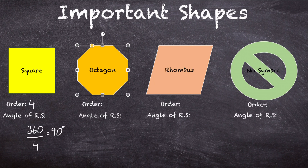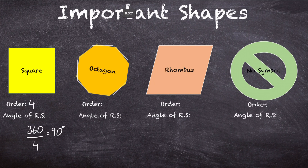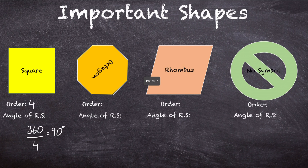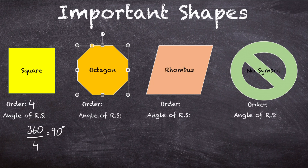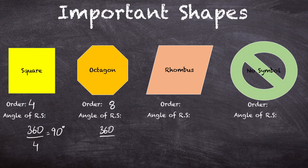Now let's look at a regular octagon — all eight sides and all eight angles are equal. We'll rotate it a full circle and count. We get the exact same shape eight times in total, so the order of rotational symmetry is 8. To find the angle, we divide 360 by 8, which gives us 45 degrees.